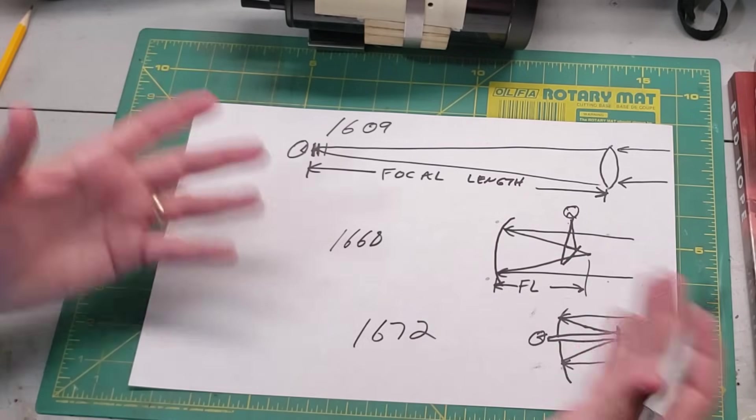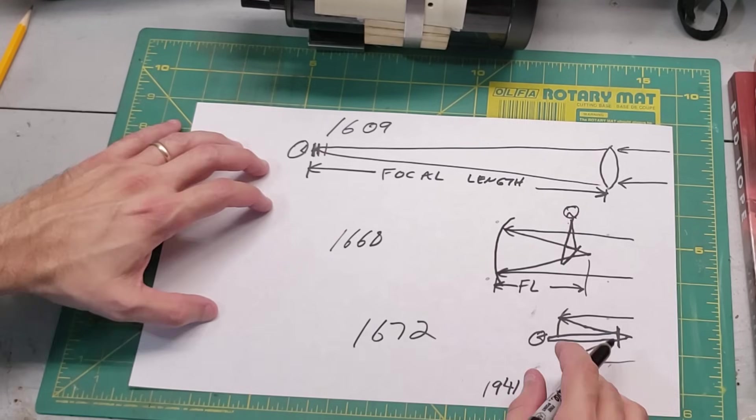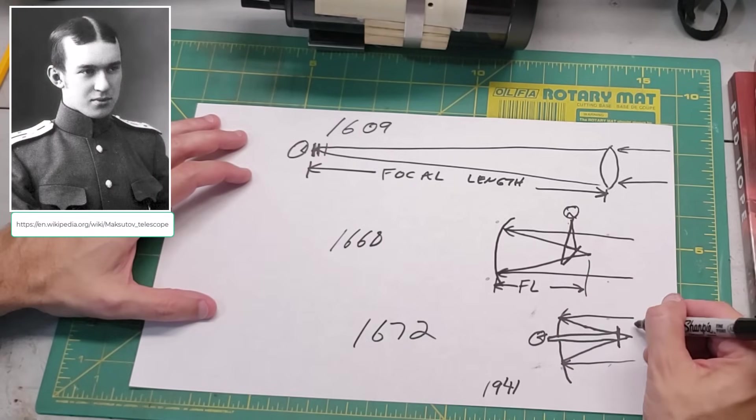One clever solution came in 1941, a long time later obviously, and it was from a clever optician named Dmitri Maksutov. What he did was he put a big lens up front, a big curved lens like this.